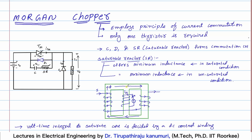When the flux comes here, it can divide either path. On the second side, the number of turns is the same and the current direction produces flux in the downward direction. So the flux produced by one side passes through the other, forming a closed path. Assuming this produces flux phi 1 and the other produces phi 2, the value of phi 1 equals phi 2. The net flux in the central limb will be equal to zero.